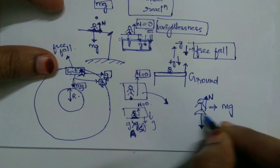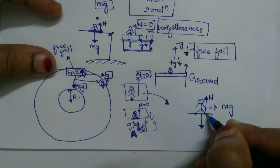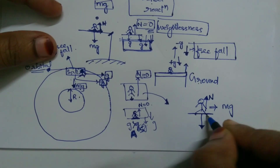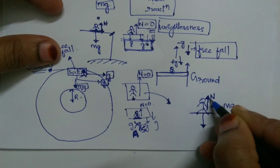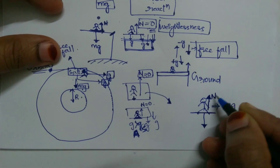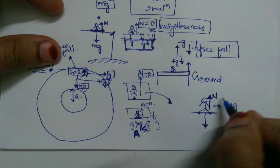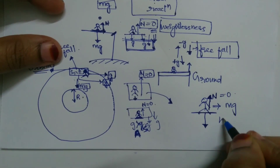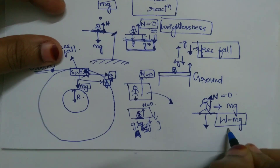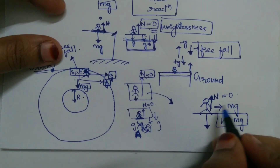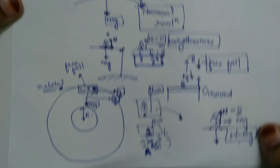Since they are not pressing the surface of the earth or any platform or the satellite, there is no back reaction — that is, normal reaction. Because of that, the normal reaction is zero. But we have W = mg, so weight will be there. The only thing is there won't be any normal reaction.